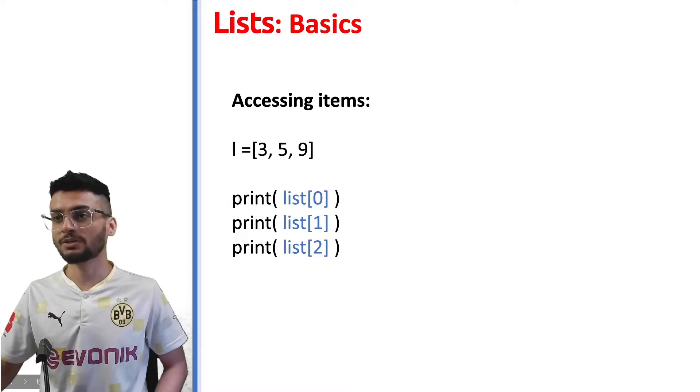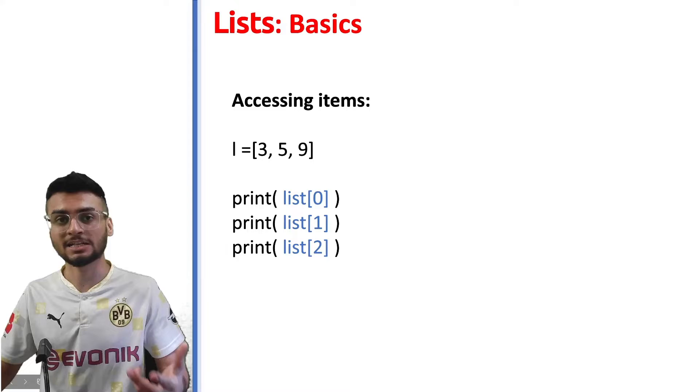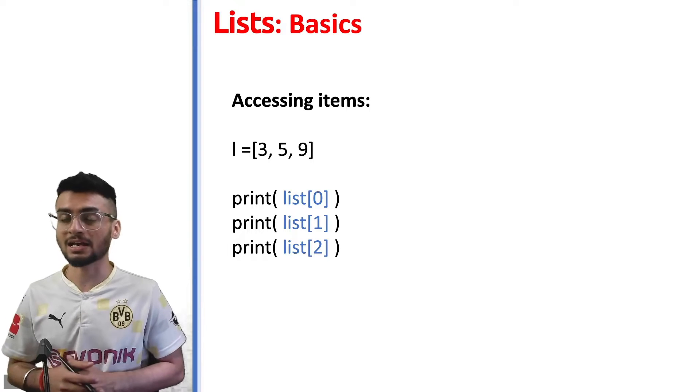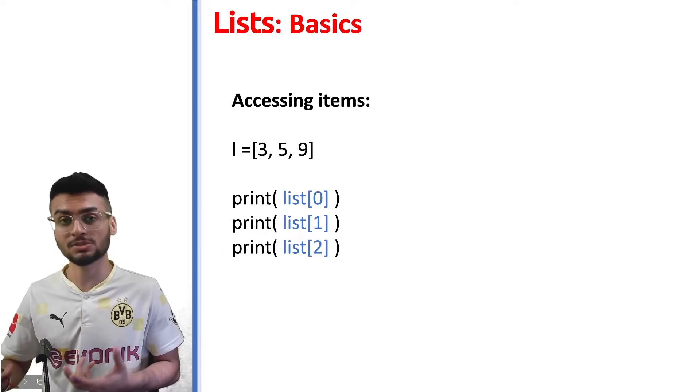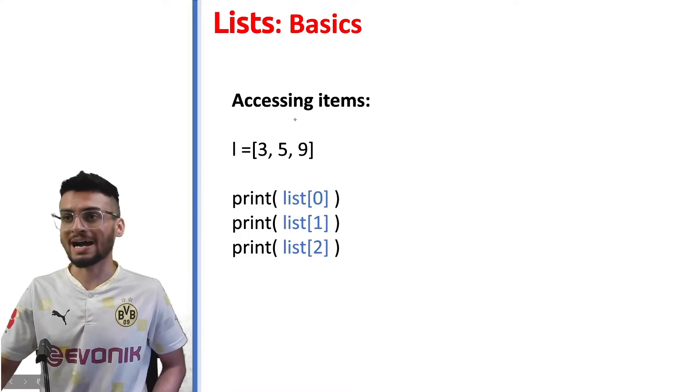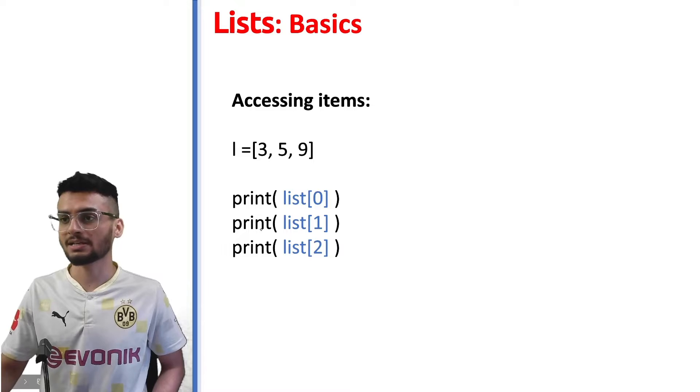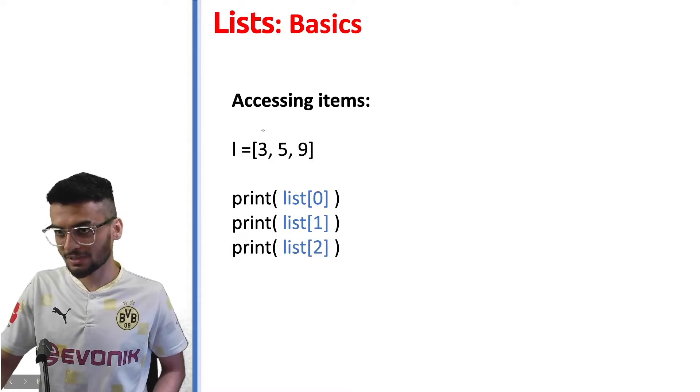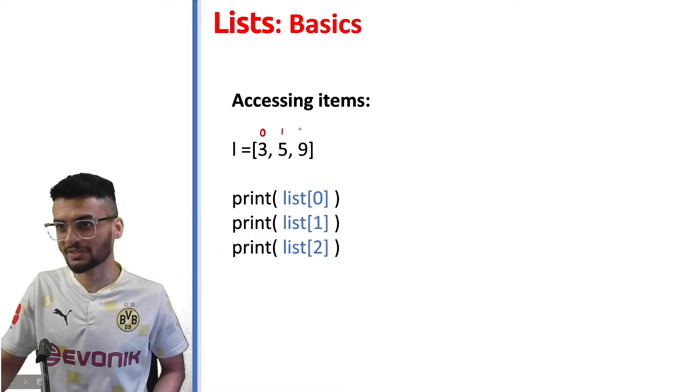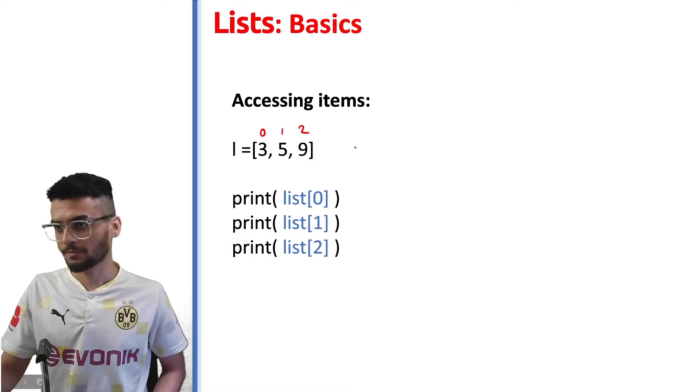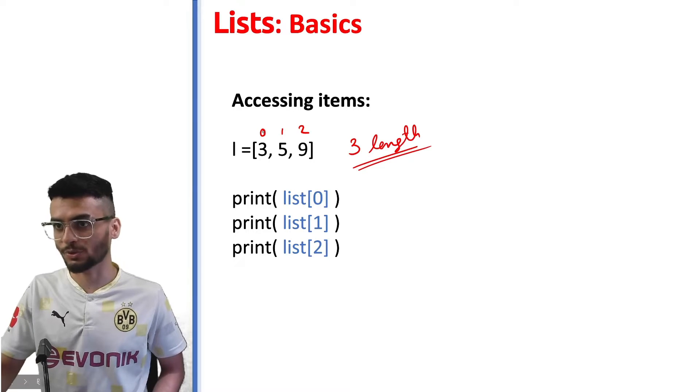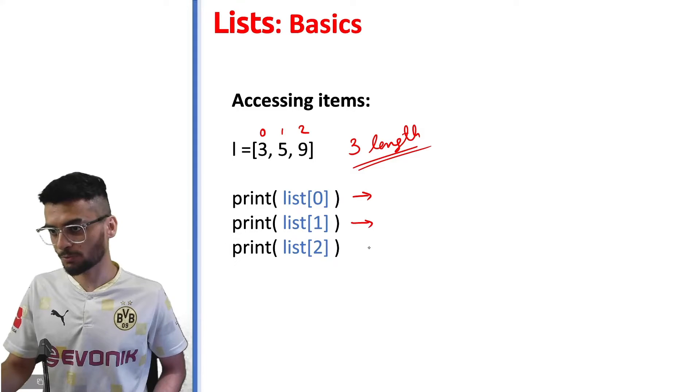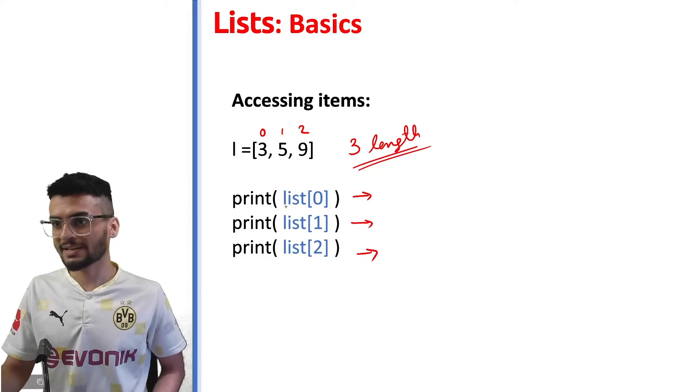So after you create a list, you need to be able to access the items inside. For example, if I have a class of roll number list in the class, I can access the roll numbers. Similarly, in order to access items from a list we use indexing. First of all, let's just write the index of each of these elements. The length of this list is three, but index will always begin with zero, one, and two.